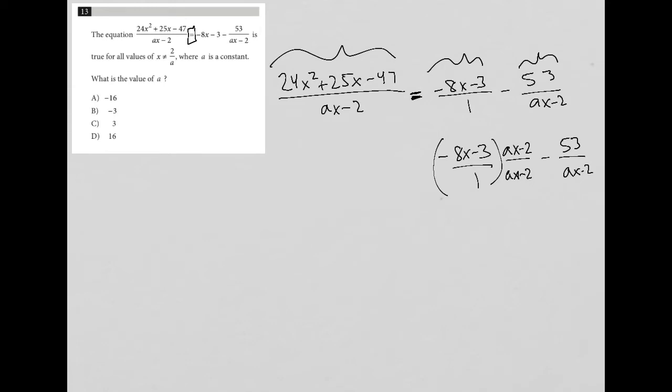That means my numerator here would become, and I'll just write it this way, negative 8x minus 3, parentheses ax minus 2, and all that's over ax minus 2 minus 53 over ax minus 2.